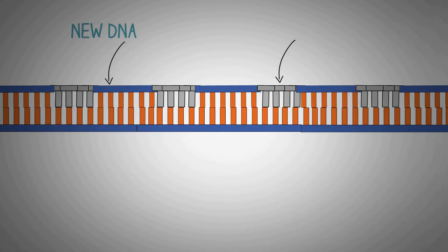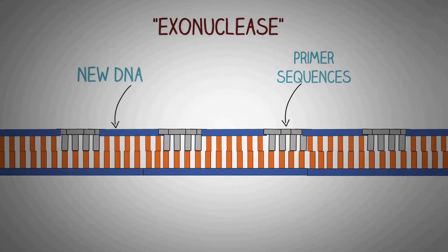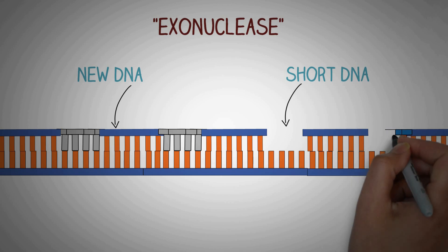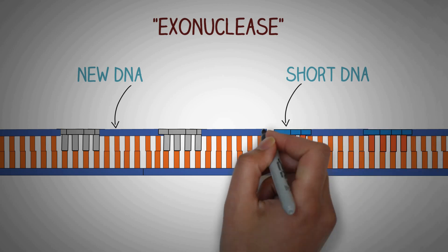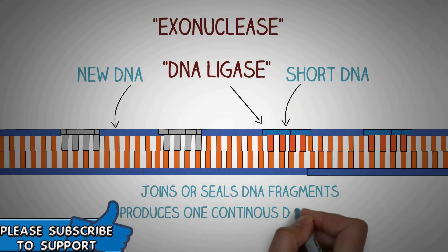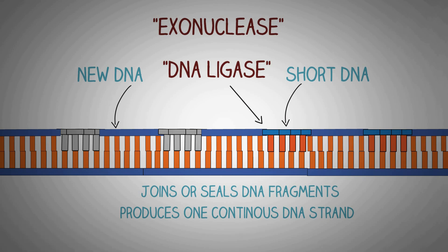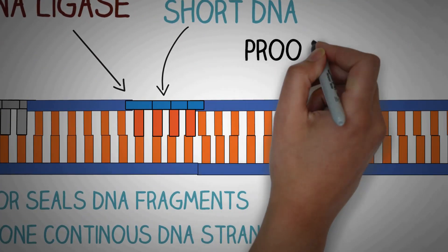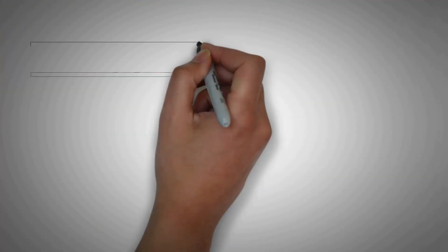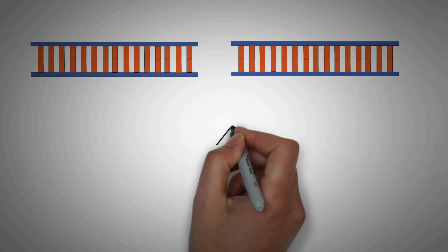After the DNA polymerase has done its job, the newly synthesized DNA has short segments of DNA with interrupting segments consisting of RNA primer. Another enzyme known as exonuclease comes into play, which removes these short primer segments. These are then replaced by short new segments of DNA by another type of DNA polymerase. After this, the enzyme DNA ligase seals or joins the DNA fragments to produce a continuous DNA strand even on the lagging strand. Lastly, another type of DNA polymerase proofreads the newly synthesized DNA for any wrong bases; if a wrong base or sequence is found, it removes and replaces it with the correct one.